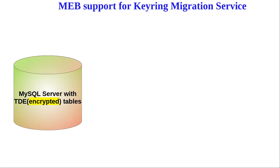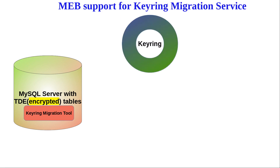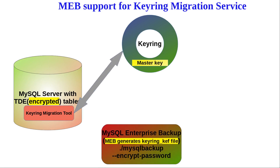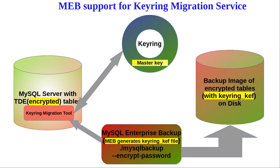Let's understand the workflow with the help of a diagram. The server encrypts and decrypts the tables with the help of a migration tool, which stores the master keys of the encrypted tables in any one of the KMIP-compliant key vaults. When a backup is triggered with MEB, it connects to the key vault through the server's migration tool and gets the master keys for the tables being copied. Once the tables are copied, MEB re-encrypts the tables with its own password provided in the encrypt-password option. This ensures that the backup of the encrypted tables is secure and encryption is intact inside the backup. MEB in turn creates a keyring encrypted file, called KEF, which contains the master keys of the encrypted tables inside the backup.